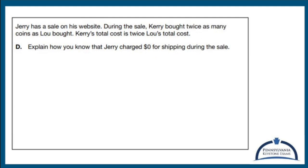we have Jerry has a sale on his website during the sale. Kerry bought twice as many coins as Lou bought. Kerry's total cost is twice Lou's cost. Explain how you know that Jerry charged zero for shipping during this sale.